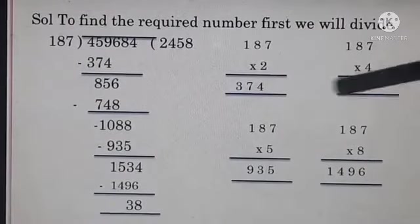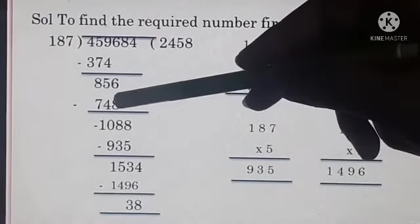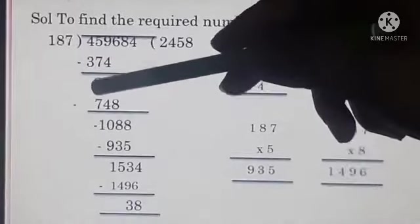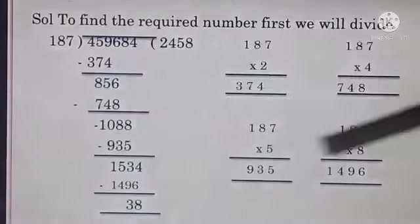187, 4s are 748. Now subtraction will be there. 16 minus 8, 8. 4 minus 4, 0. 8 minus 7, 1. Now next number you will take 8, it is 1088.